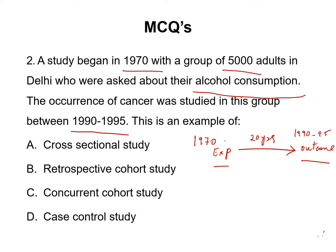Can this be a cross-sectional study? Definitely not. For a cross-sectional study, both exposure and outcome should occur at the same point in time. But in this question, only the exposure is occurring at the beginning of the study and we are moving forward for the outcome to occur. So cross-sectional study is not the answer.